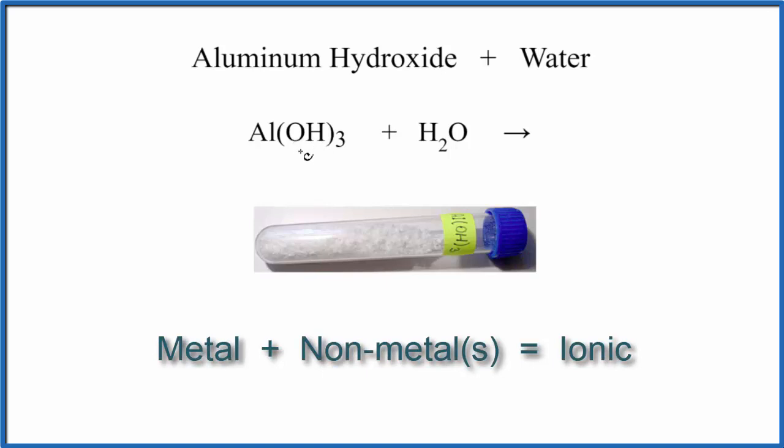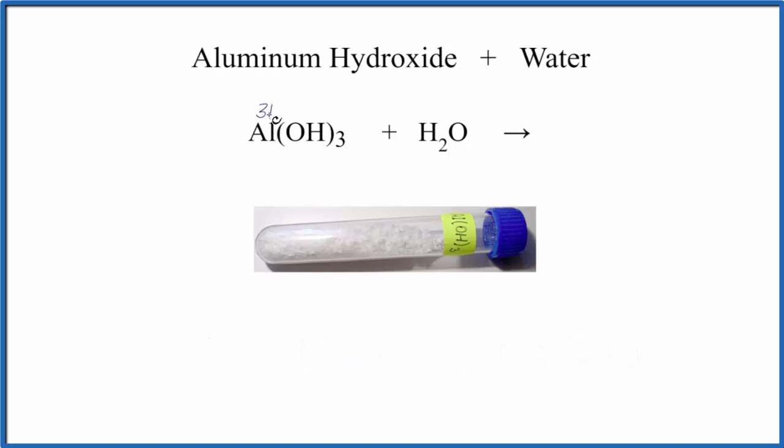And that would probably look something like this. The aluminum has a 3 plus charge. The hydroxide has a minus charge, but we have three of them, so it's a neutral molecule altogether.